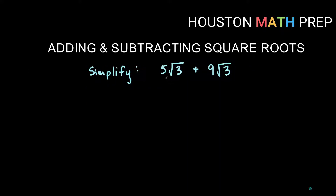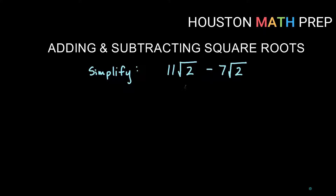If I'm simplifying 5 root 3s plus 9 root 3s, think of the root 3 like the cat. 5 cats plus 9 cats would be 14 cats, so 5 root 3s plus 9 root 3s is going to be 14 root 3s. And yes, it's just that easy. 11 root 2s minus 7 root 2s — subtracting 11 of something minus 7 of something gives us 4 of that same something, so 11 root 2s minus 7 root 2s gives us 4 root 2.